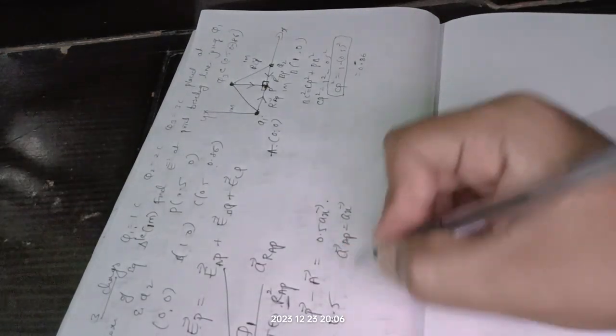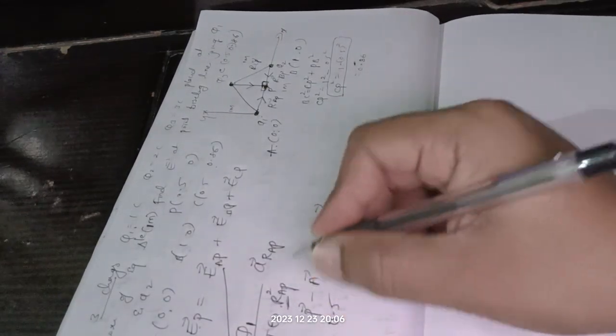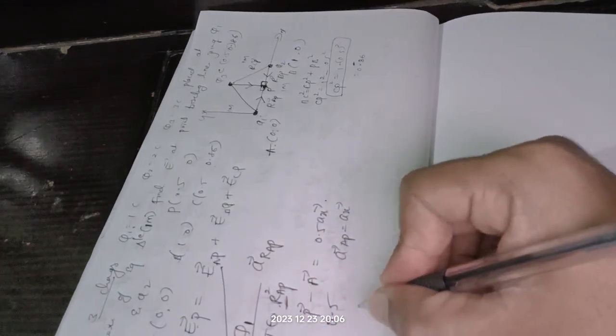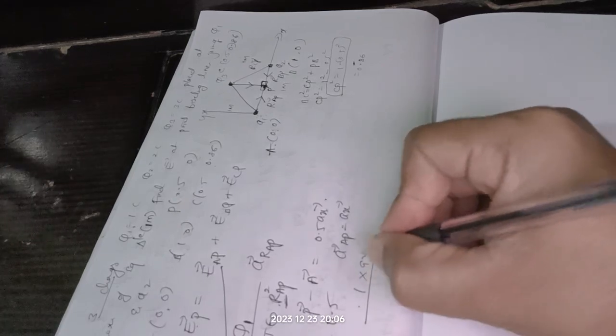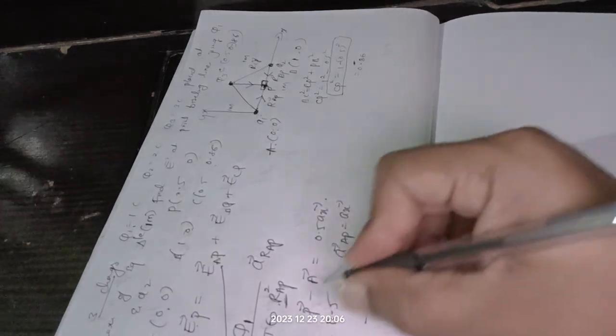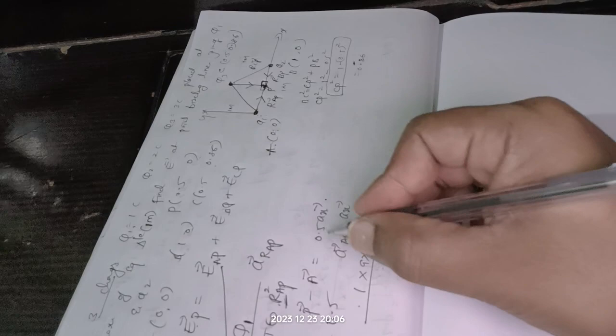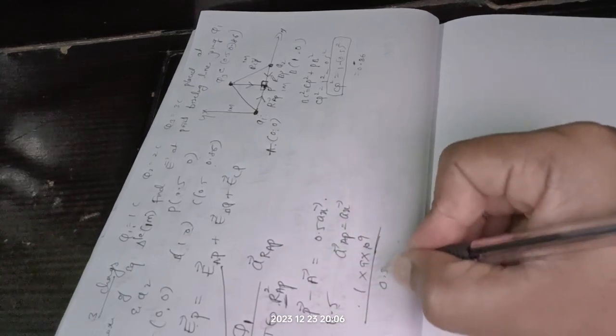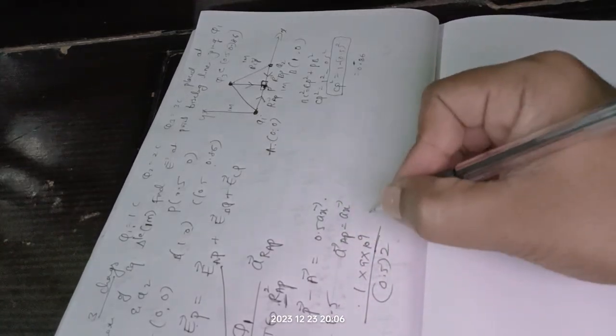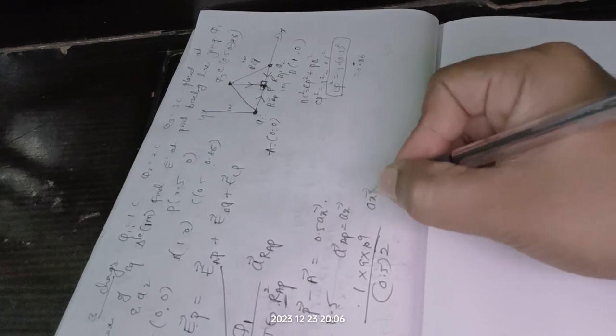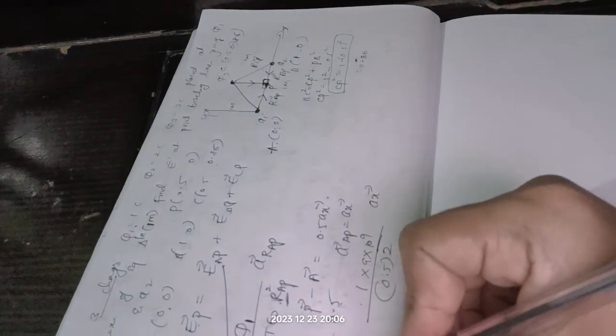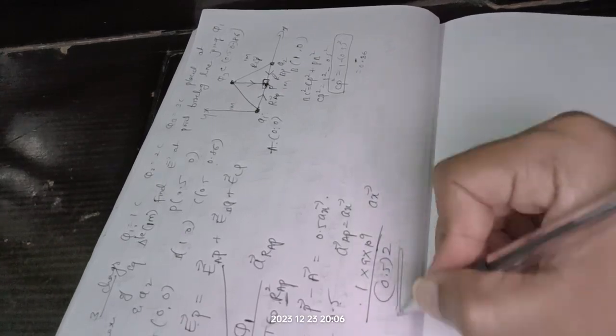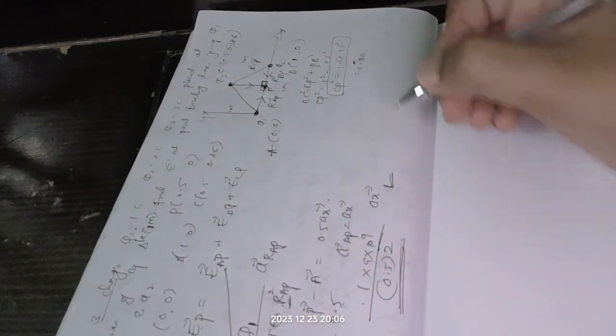So if you find out, if you just substitute all here, so I will show it only for one. q1, q1 is 1 coulomb, so 1 divided by 4πε₀ means 9×10⁹. r_AP squared, what is the value of r_AP? 0.5, so it is 0.5 squared. What is the unit vector? a_x. So if you calculate this E_AP, the RHS side you will get some answer with respect to a_x.